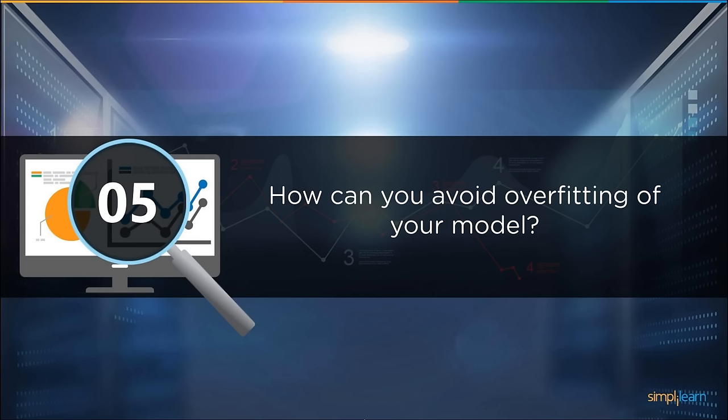How can you avoid overfitting your model? There are three main methods. Overfitting means your model is only set for a very small amount of data and ignores the bigger picture. First, keep the model simple — take into account fewer variables, removing some noise from the training data. Second, use cross-validation techniques such as K-folds cross-validation. Third, use regularization techniques such as Lasso that penalize certain model parameters likely to cause overfitting. Cross-validation is typically done during data preparation; regularization techniques like Lasso are applied during the modeling process.